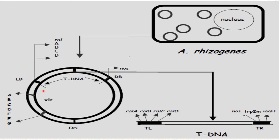The T-DNA consists of a left border and a right border. The left T-DNA contains four genes: rol A, B, C, and D. Although rol A, B, and C are all involved in root induction, only rol B has the highest yield in root hair induction.